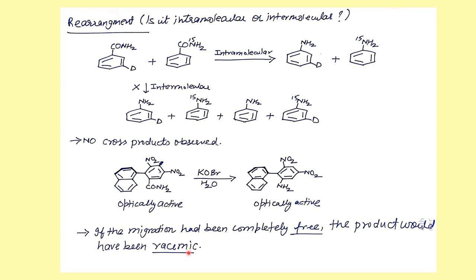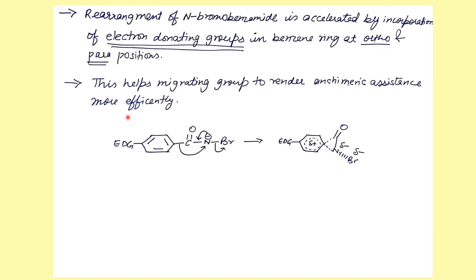If migration were free (intermolecular), the product would have been racemic. The fact that starting from an optically active compound you get an optically active product confirms intramolecular migration. To accelerate rearrangement, placing an electron-donating group on the aryl ring pushes electron density into the ring, facilitating aryl group migration. This creates a positively charged intermediate (neighboring group participation / anchimeric assistance) through which the rearrangement takes place.